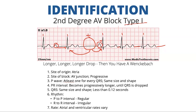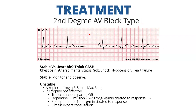The site of origin is in the atria. The block is in the AV junction — it's a progressive block, meaning the block gets longer until the electrical impulse does not make it through the AV junction, and that's when you drop a beat. There's at least one P wave for every QRS, same size and shape. The PR interval becomes progressively longer until the QRS is dropped. The QRS is usually the same size and shape, usually narrow. The rhythm has a regular P to P interval but an irregular R to R interval because of that dropped beat. The atrial and ventricular rates can vary.